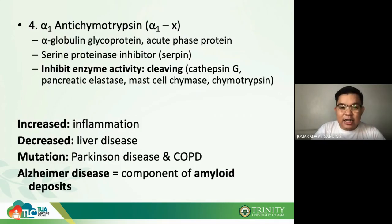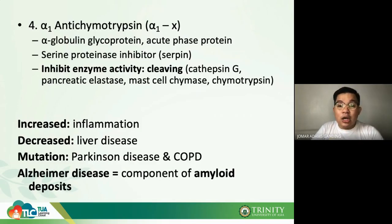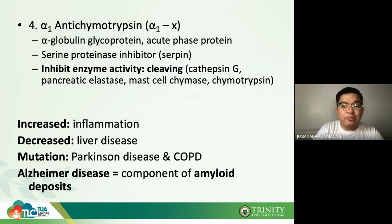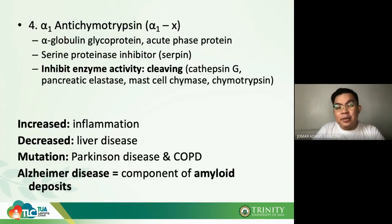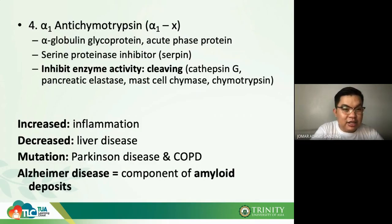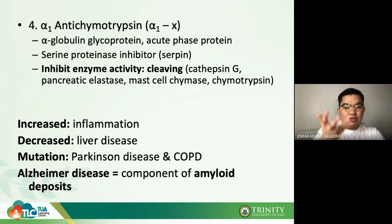Alpha-1 antichymotrypsin prevents abrupt uncontrolled increases in these enzymes. It is increased in inflammation and decreased in liver disease. Notably, it is also seen in Parkinson's disease, COPD, and Alzheimer's disease — where it is a component of amyloid deposits. Measuring its levels may be relevant for Alzheimer's research.